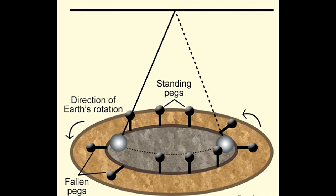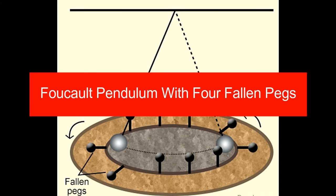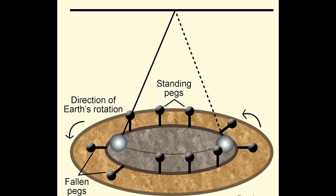Foucault pendulum with four fallen pegs. After a sufficiently long period of time, typically about an hour or more, the pendulum knocks down another two diagonally opposite pair of pegs as shown in the image above. As more and more time elapses, the pendulum periodically keeps knocking down the standing pegs.